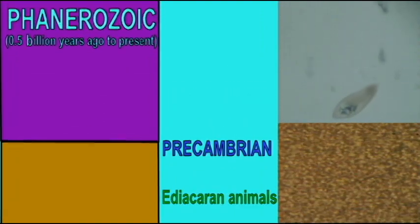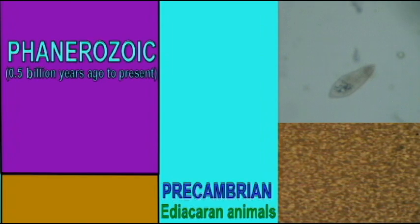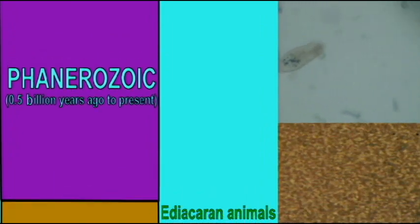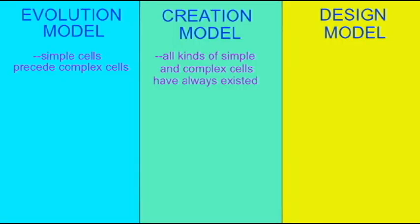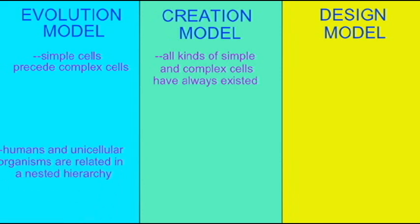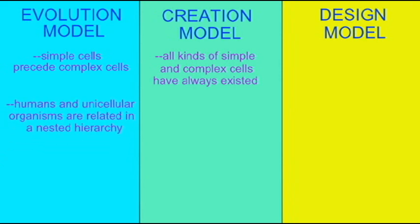There were no other forms of life which have been found as fossils during this vast length of time. In the evolution model, humans and unicellular organisms are not only related, and therefore should share certain features, they are related in a nested hierarchy pattern.